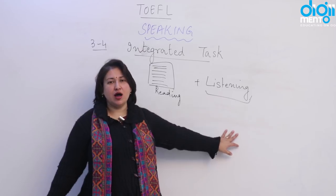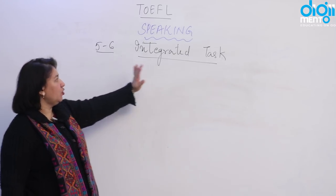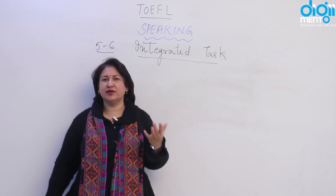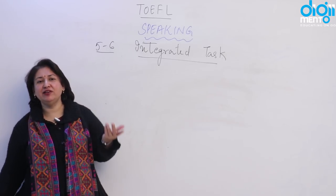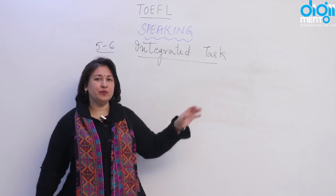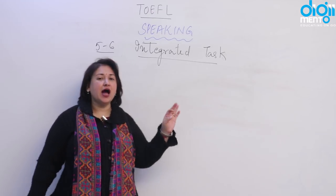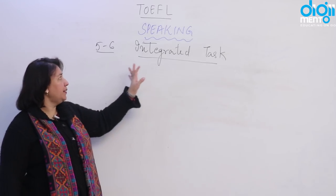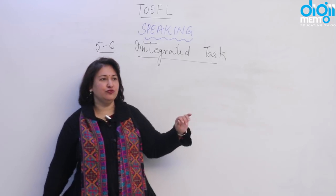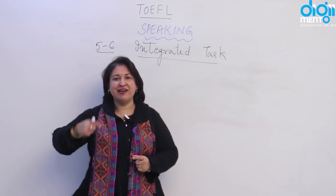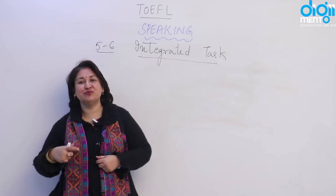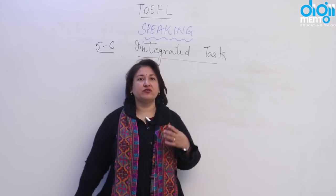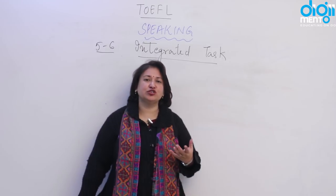Questions five and six are also integrated tasks, but here you only listen — a three to four minute conversation or academic lecture is played, and you answer questions based on what you heard. Unlike tasks three and four, there is no reading passage. Speaking is scored out of 30 total, roughly five marks each. If independent tasks are your strength, focus there and give at least two examples to justify your answers to score well.